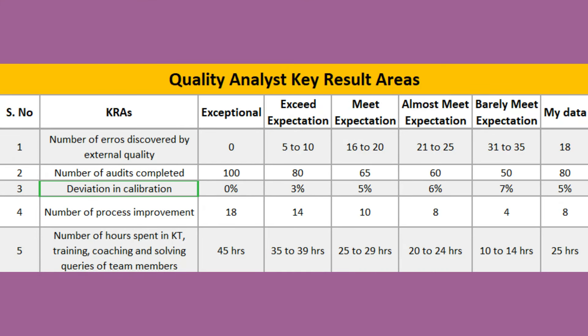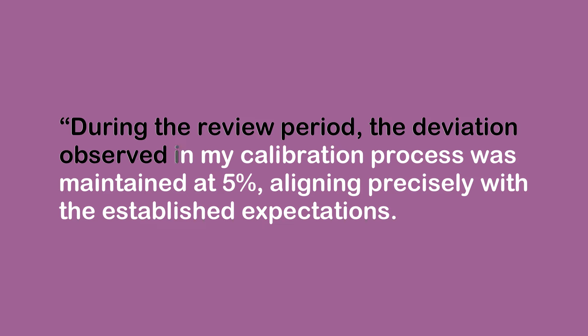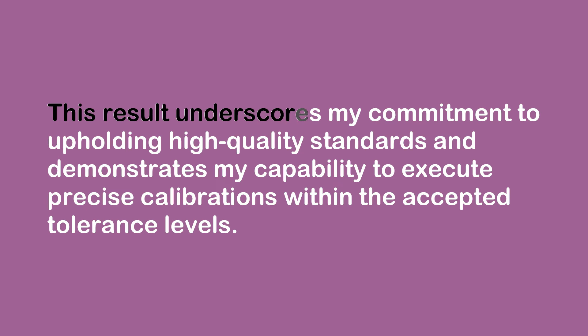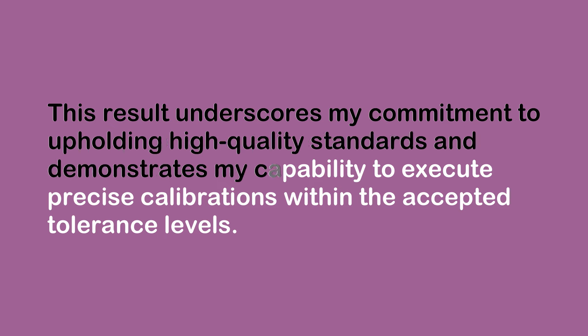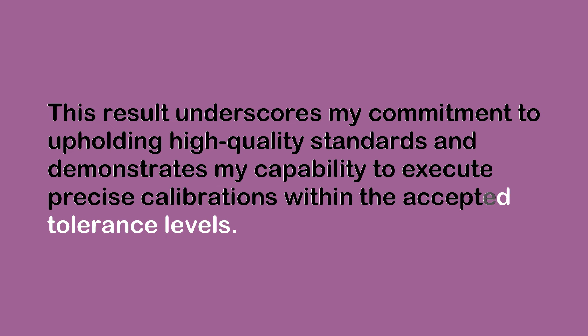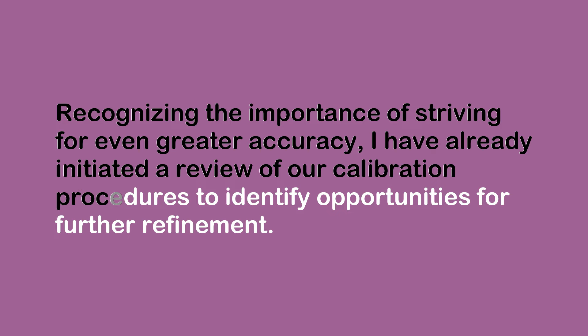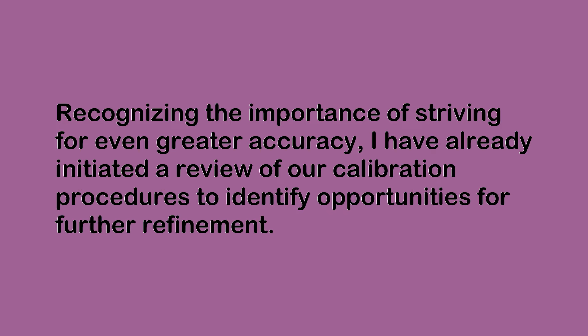Let us now discuss the third KRA: deviation and calibration. The data shows 5%, which falls under 'meets expectations.' Here is the comment: 'During the review period, the deviation observed in my calibration process was maintained at 5%, aligning precisely with established expectations. This underscores my commitment to upholding high-quality standards and demonstrates my capability to execute precise calibrations within accepted tolerance levels. Recognizing the importance of striving for even greater accuracy, I have already initiated a review of our calibration procedures to identify opportunities for further refinement, including investing in advanced training for myself.' This comment positively acknowledges that expectations were met while also showing the professional is striving to overachieve and has lined up training.